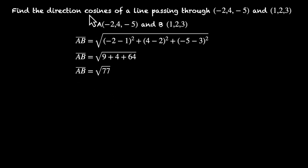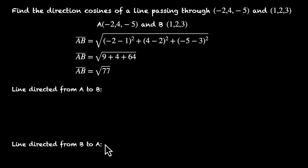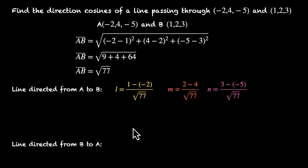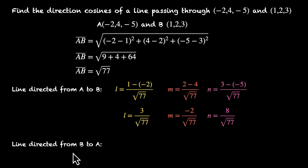The line through these two points has two sets of direction cosines. Headed from A to B: L = (1−(−2))/√77 = 3/√77, M = (2−4)/√77 = −2/√77, N = (3−(−5))/√77 = 8/√77. For the line directed from B to A, we flip all signs: L = −3/√77, M = 2/√77, N = −8/√77.